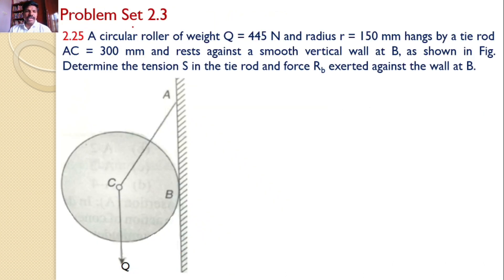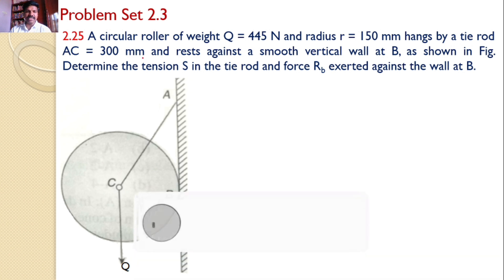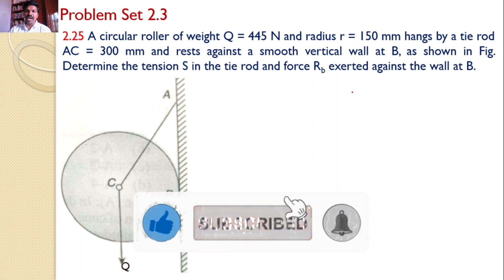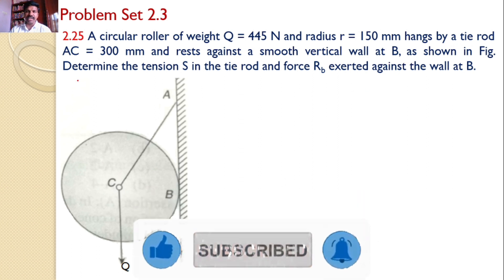In this tutorial we will discuss problem set 2.3 and problem number 2.25. A circular roller of weight Q equal to 445 newtons and radius r equal to 150 mm hangs by a tie rod AC of length 300 mm and rests against a smooth vertical wall at B, as shown in the figure.